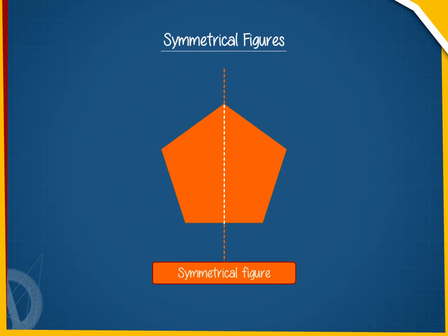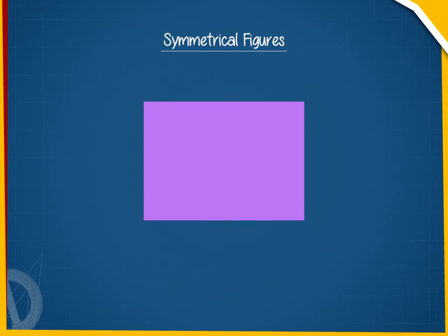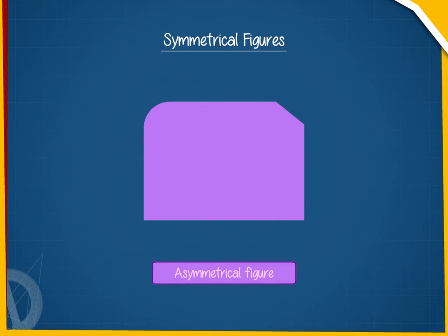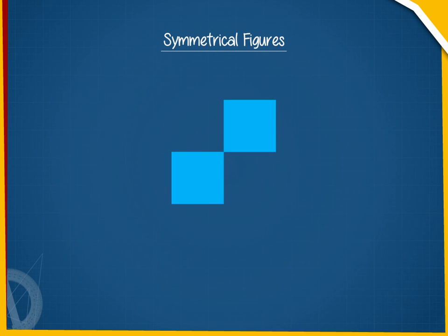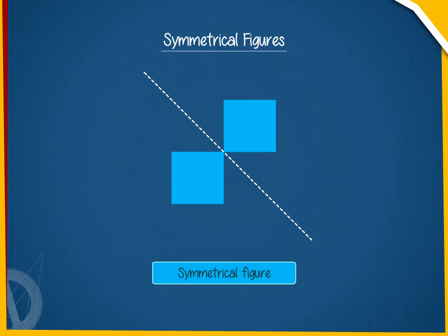The third figure is not symmetrical, as we cannot divide it into two exact symmetrical halves. The last figure again is symmetrical because we can divide it into two exact symmetrical halves.